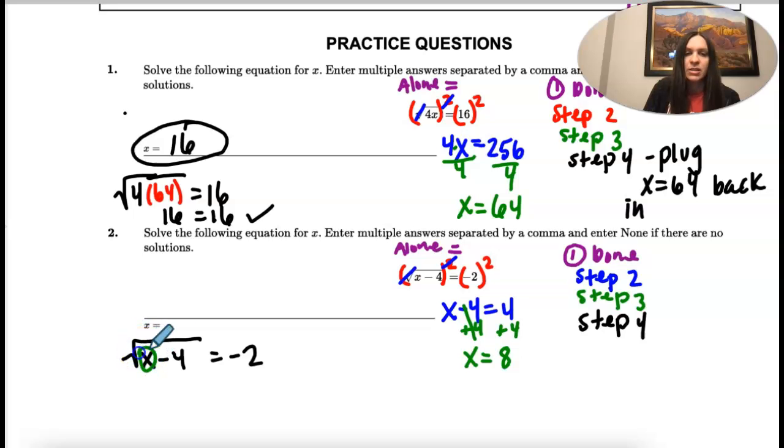I'm going to replace this. So I still have the square root, but instead of x, I'm going to put what we solved for, and then minus four equals negative two.